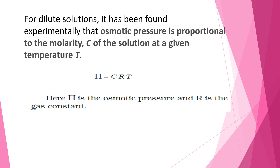For dilute solutions, it has been found experimentally that osmotic pressure is proportional to the molarity C of the solution at a given temperature T. Pi is the osmotic pressure, which is equal to CRT, where C is the concentration of the solution in molarity, R is the gas constant, and T is the temperature.